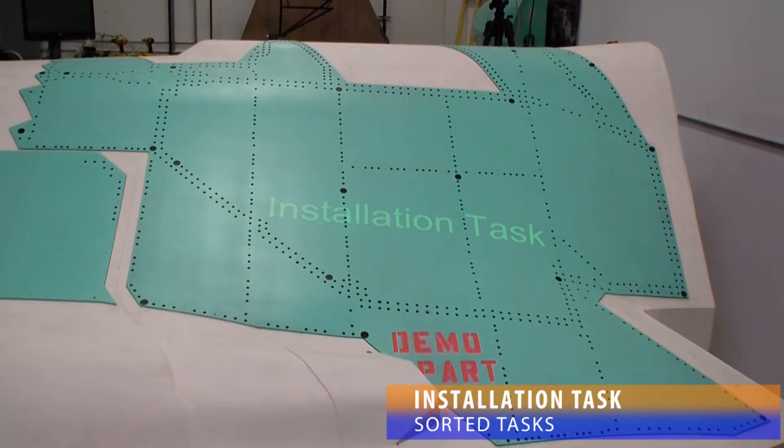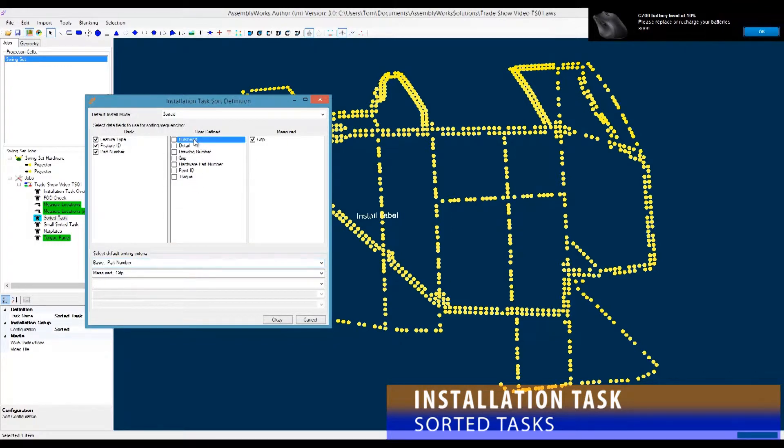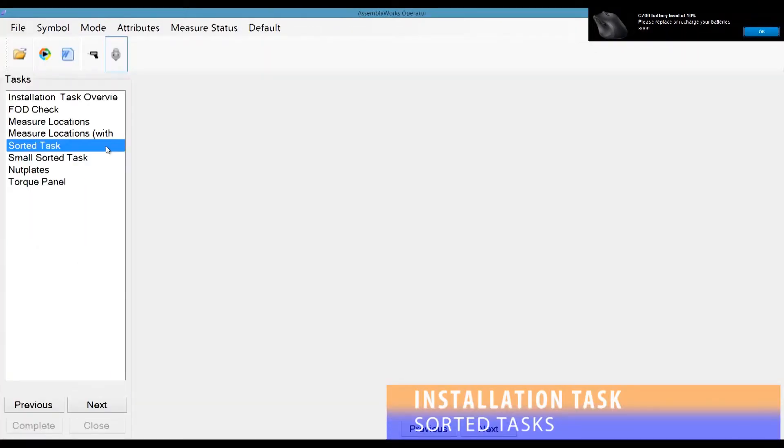Installation task's most powerful feature may be dynamic sorting. The author selects the properties that should be available to the technician, and which properties are selected by default. When the sorted installation task is loaded,